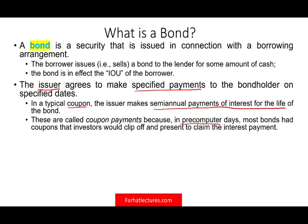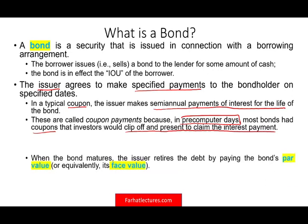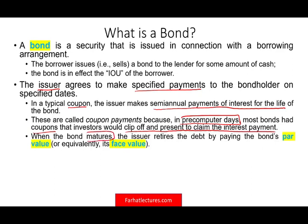They're called coupons because in the pre-computer days, most bonds had coupons that investors would literally clip off and present to claim interest payments. So every six months you would clip the coupon and mail it to the company or go to the company treasury to get your interest payment. When the bond matures — meaning at the end of the life of the bond, after 5, 10, or 15 years — you want your money back. The issuer retires the bond, paying back the debt to the bondholder, and they pay something called the par value or face value.